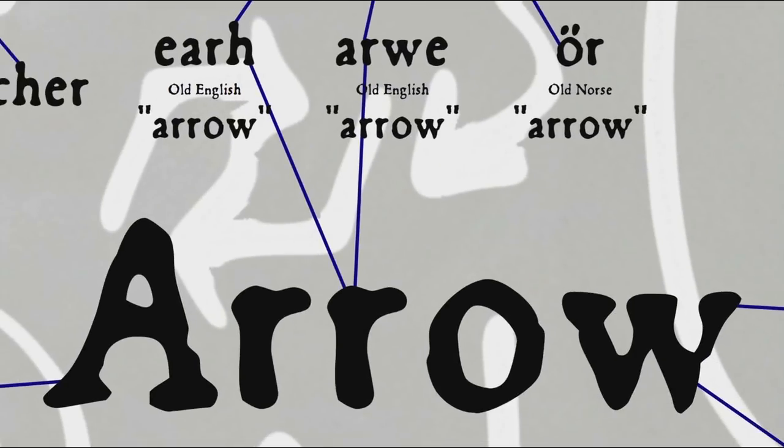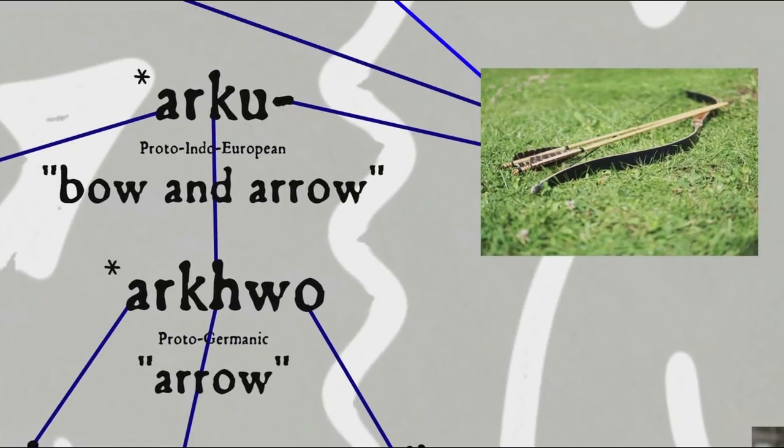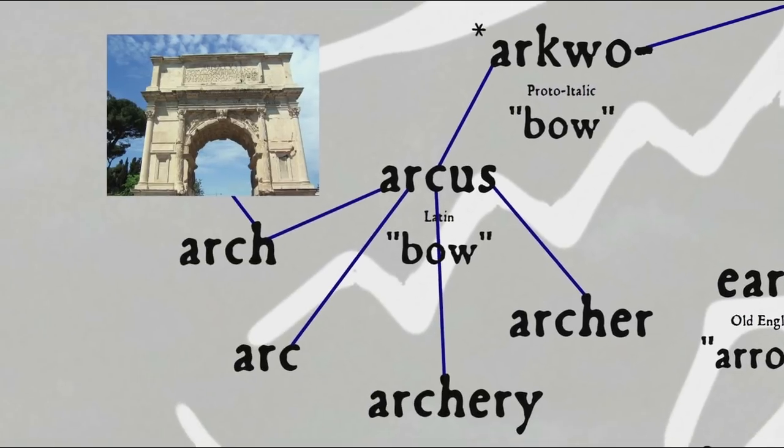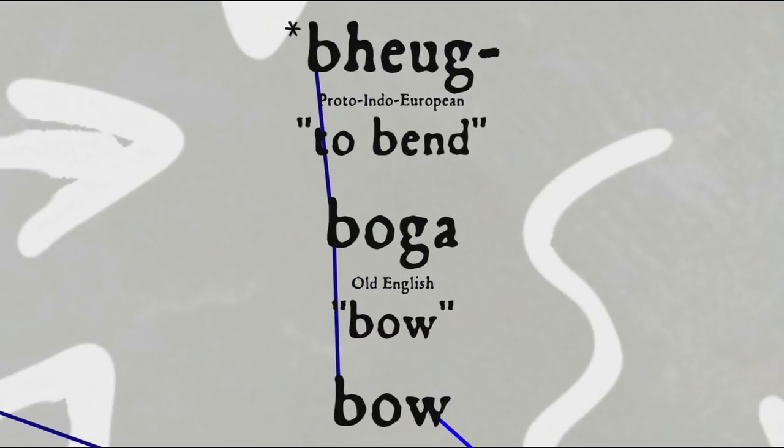The word arrow comes from the Old English forms arch and arwa, which may have been influenced in form by Old Norse, which go back to Proto-Germanic arquo and Proto-Indo-European arcu. The curious thing about the root arcu is that it seems to have meant bow and or arrow. In the Germanic languages, like English, it produced words with the sense arrow, but in Latin it produced arcus, meaning bow, which came down through French into English, giving us archer and archery, but also arc and arch because of the bow-like shape these words describe. The word bow, on the other hand, comes from the Proto-Indo-European root beug to bend because of its curved shape.